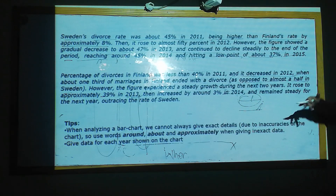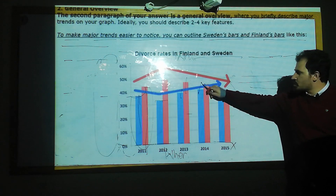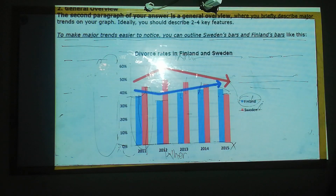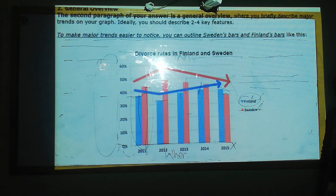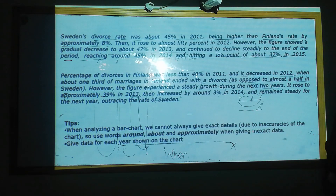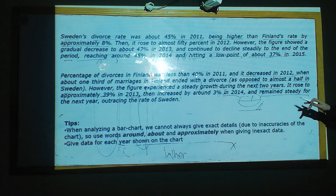However, the figure experienced substantial growth during the next two years. Finland's divorce rate showed a gradual increase in the next two years — 2013 and 2014. It rose to approximately 39% in 2013, then decreased by around 3% in 2014, and remained steady for the next year, outracing the rate of Sweden.